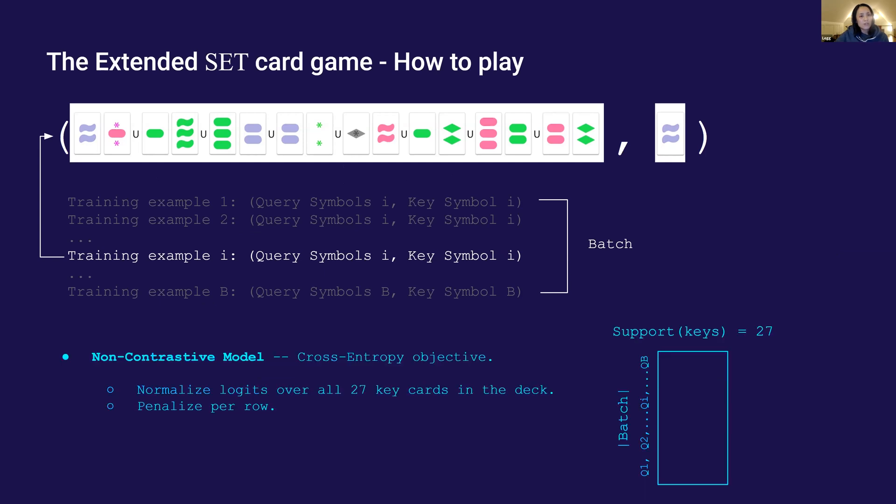The non-contrastive model uses a conventional cross-entropy objective. The scores are penalized across keys in the support.